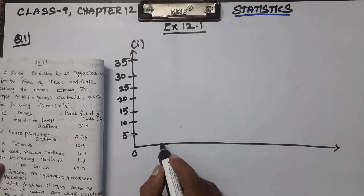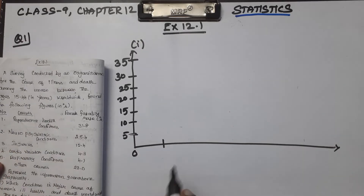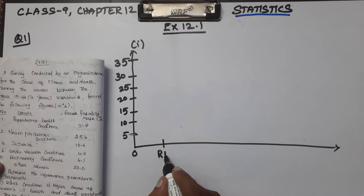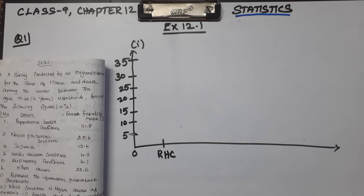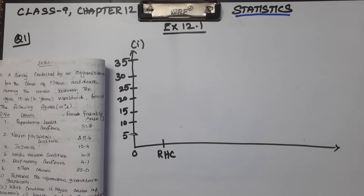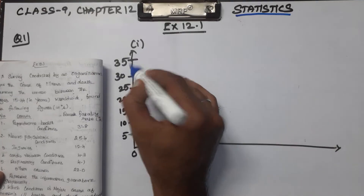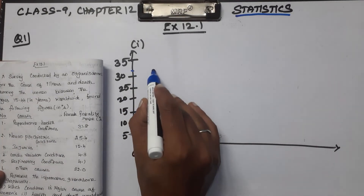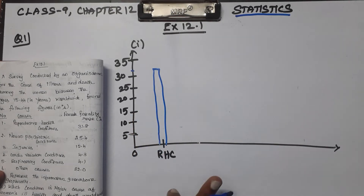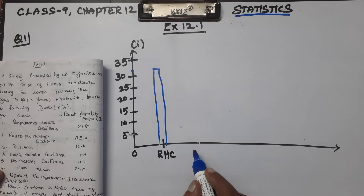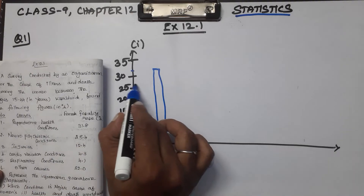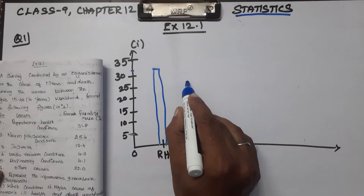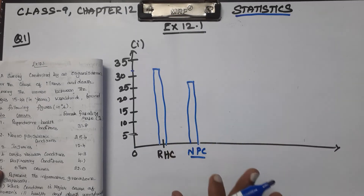Cost 1: Reproductive Health Conditions, abbreviated RHC. So we draw a bar diagram. Graphically, the value is 31.8. Bar graph 2: Neuro-Psychiatric Conditions, value 25.4.